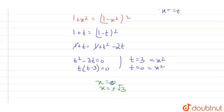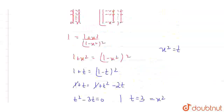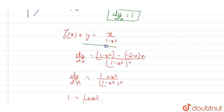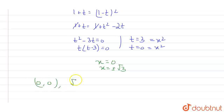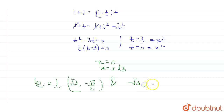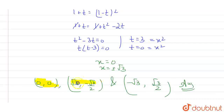Now, using these three values of x, we can find the three values of y by putting x = 0, x = -√3, and x = +√3 into the equation y = x/(1 - x²). When we put x = 0, y = 0. When we put x = √3, y = -√3/2. And when we put x = -√3, y = √3/2. So the points are: (0, 0), (√3, -√3/2), and (-√3, √3/2). These are the possible values of (h, k).